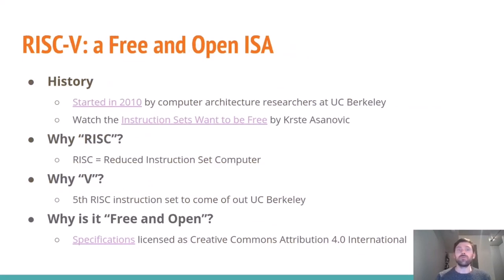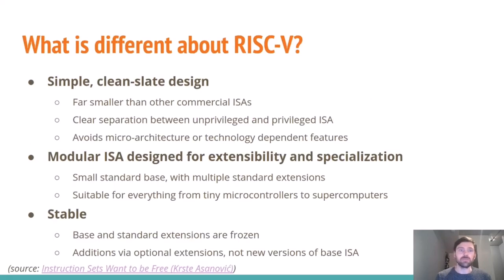RISC-V is a free and open instruction set. This started about 10 years ago by computer architecture researchers at UC Berkeley. The professor that started the project has a great talk called 'Instruction Sets Want to be Free' that I recommend checking out. The V is actually the Roman numeral five, because it's the fifth RISC instruction set to come out of Berkeley. The specifications for RISC-V are licensed under Creative Commons Attribution, which is considered an open source license.